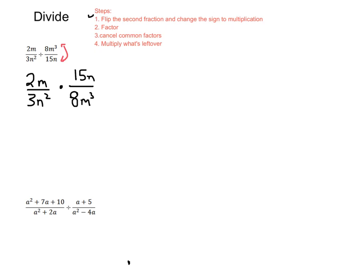So we took care of our first step. Now our step 2 is just to factor. So we're going to do any sort of prime factorization we can. I'm going to kind of list this out longhand. So 2 is just 2, m is still just m. 3 we can't break up at all, so that's going to be 3. n squared we're going to write as n times n.